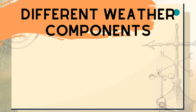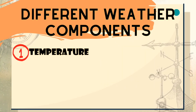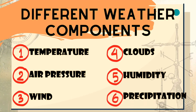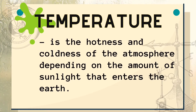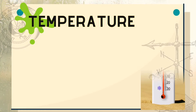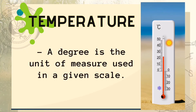There are elements that affect weather: temperature, air pressure, wind, clouds, humidity, and precipitation. Temperature is the hotness and coldness of the atmosphere depending on the amount of sunlight that enters the earth. It can be measured with a thermometer, and it is measured in degrees. One temperature scale we use is the Celsius scale. In the Celsius scale, there are 100 degrees between the temperature at which water freezes and the temperature at which it boils.